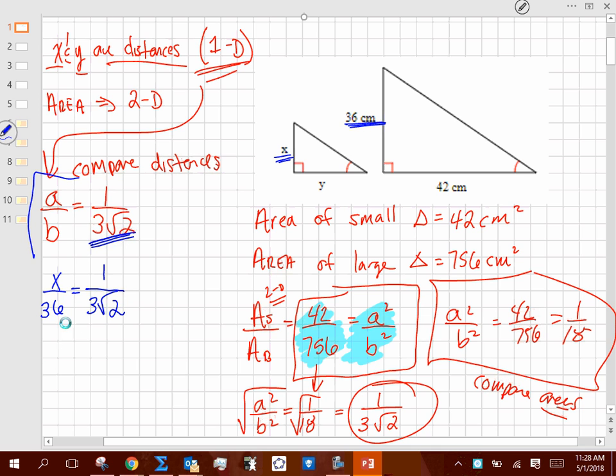So when I cross multiply, I get 36 is equal to 3 radical 2 times x. 3 radical 2 is my coefficient for x, so divide both sides by that. But do I like that radical 2 in the bottom? So multiply by radical 2 over radical 2. So it gives me 36 radical 2 all over, what's 3 times radical 2 times radical 2? That gives me square root of 4, which is 2. So what's 3 times 2? 6. So what's 36 divided by 6? 6. So 6 radical 2, that's my x value.